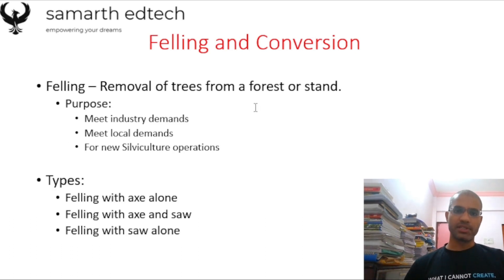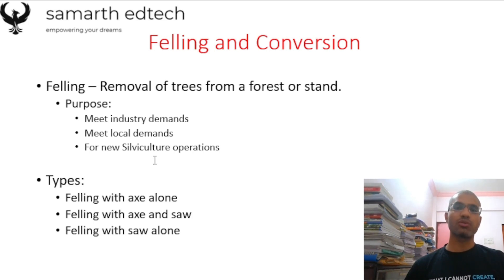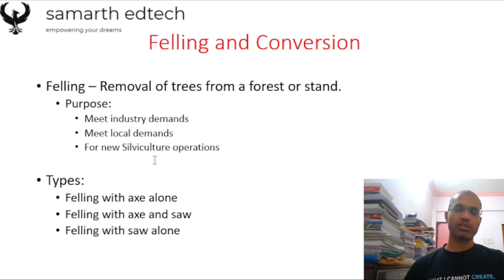The next topic is felling and conversion. Felling is the removal of trees from a forest or stand. The purpose is to meet industry demands, local demands, or for new silvicultural operations — for example, removing previous trees to establish a new set. Types of felling are: felling with axe alone, felling with axe and saw, and felling with saw alone.